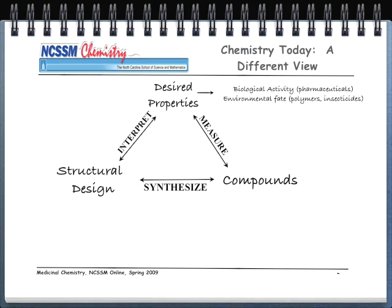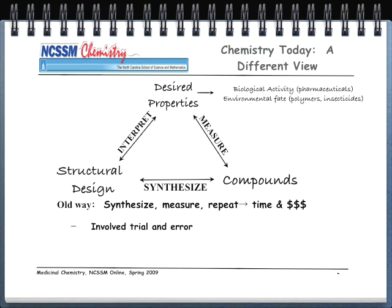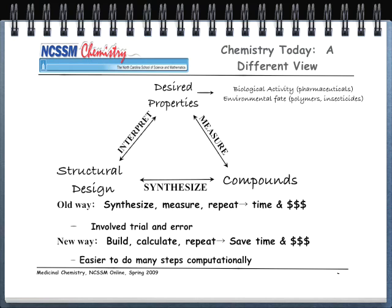The old way is to synthesize — we make the drug, we measure, we repeat this over and over again. That costs a lot of time and money and involves a lot of trial and error. The new way is that we want to computationally build these molecules, calculate them computationally, and repeat that, which involves a significant savings of time and money. It's easier to do many steps computationally rather than experimentally in the laboratory. We still need to do the lab work, but we can save an awful lot of time and money by doing some of the preliminary work computationally.